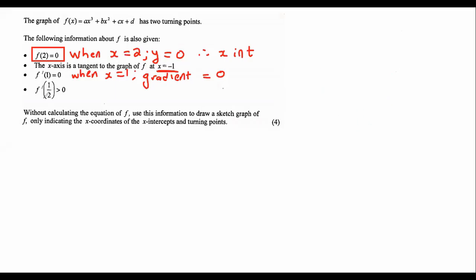Then they also tell us that when x is equal to a half, the gradient, because remember, that's what that little line means, the gradient is positive. Because it says that the gradient is bigger than 0.